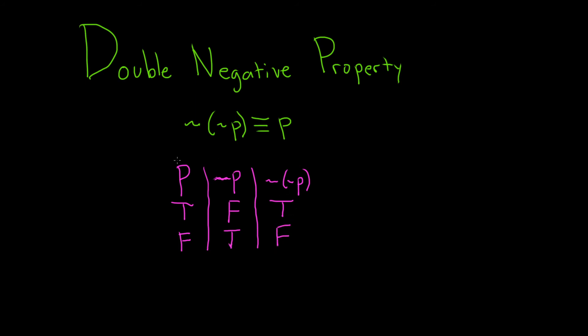And so now to check to see if these are logically equivalent, what we do is we look at the end result. So look here and look here, right? Because this is P and this is over here not not P. And look, row by row, these are exactly the same. True, true, false, false.